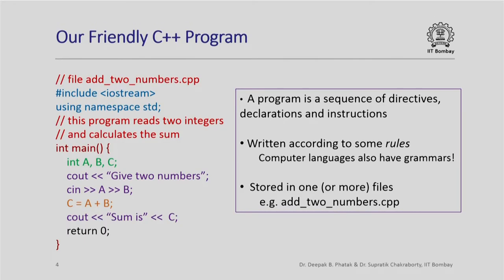When we write a C++ program, we usually store it in one or sometimes more than one file. Currently, we are going to consider a C++ program written in one file. We typically use the extension .cpp, standing for C++, to denote a file containing a C++ program. For example, this program could be saved in a file called add_two_numbers.cpp, but you could choose your own file name and add the extension .cpp to it.